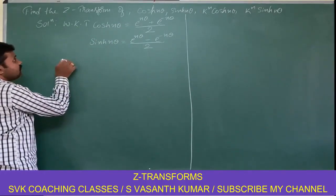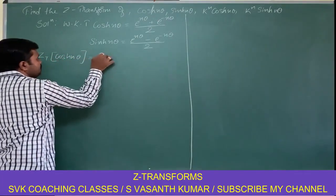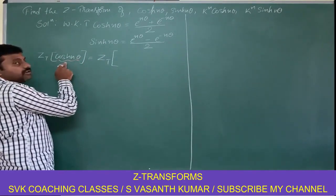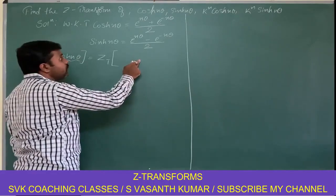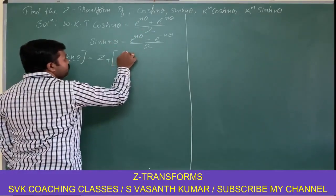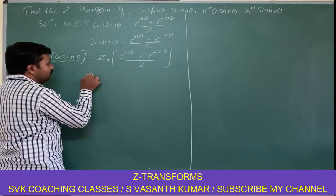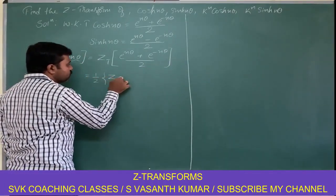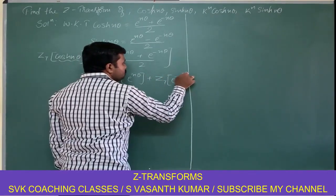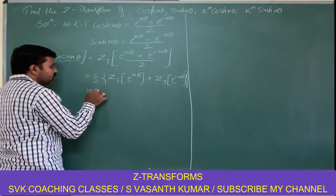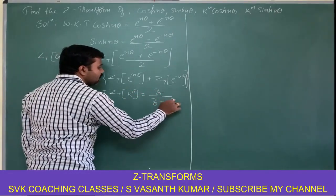So applying these two definitions, we can find the Z transform of cosh(nθ) and sinh(nθ). The Z transform of cosh(nθ) is not in the list of standard form, so I am converting it to the standard form in terms of k power n. That is: 1/2 times Z transform of e power n theta plus e power minus n theta. We know that the Z transform of k power n is z divided by z minus k.